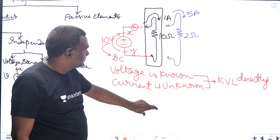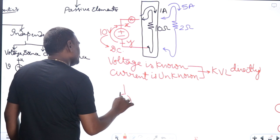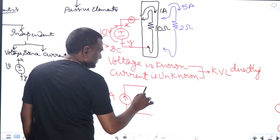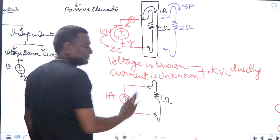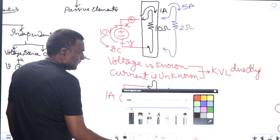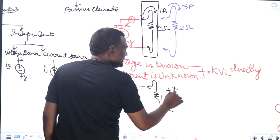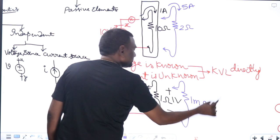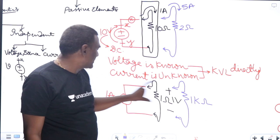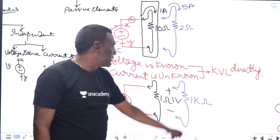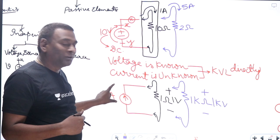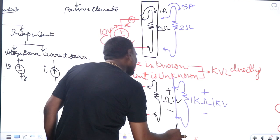Now let us think of a current source. If I think of a 1-ampere ideal independent current source connected to 1 ohm, the same 1 ampere has to flow, so voltage will be 1 volt. If I change the system to a 1-kilohm resistance, same 1 ampere should flow, so voltage becomes 1 killovolt. For a current source, current is known, but voltage across the current source is unknown until you know the connected system.